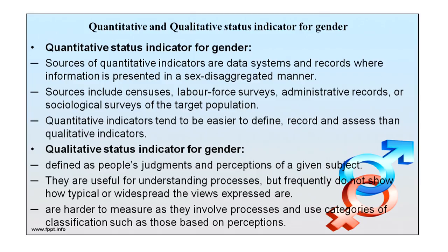There are quantitative and qualitative status indicators for gender. Sources of quantitative indicators include data systems and records where information is presented in sex-disaggregated manner — censuses, labor force surveys, administrative records or sociological surveys for the target population. Quantitative indicators tend to be easier to define, record and assess than qualitative indicators. Qualitative indicators are defined as people's judgments and perceptions of a given subject. They are useful for understanding processes but frequently do not show how typical or widespread the views expressed are, and are harder to measure as they involve classification based on perception.